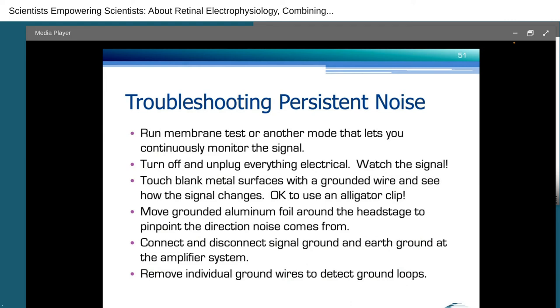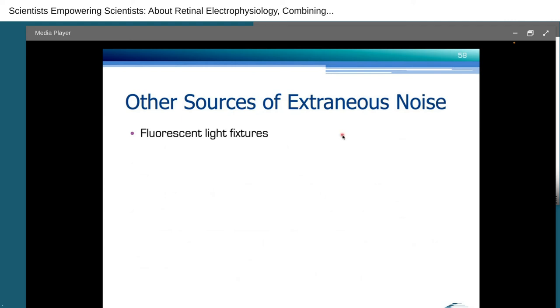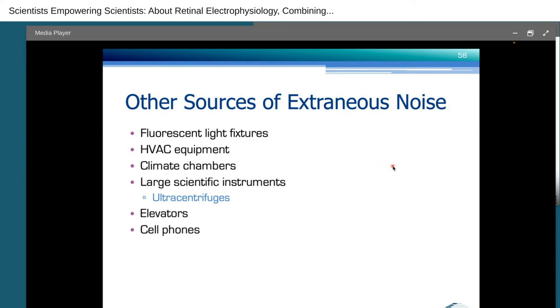You want to turn off and unplug everything electrical and watch your signal change. If it changes when you unplug something, then there you have your culprit. You want to touch blank metal surfaces with a grounded wire and again see how the signal changes. When I touch this screw near my objective mount on the microscope, and all of a sudden my line frequency hum goes away, then there you have your culprit. For this, it's okay to use an alligator clip. Only if you have identified a component, then use a banana or some other more reliable connector. You want to move a grounded sheet of aluminum foil around the head stage to get an idea of what direction the noise may come from. You may have to connect or disconnect the signal ground and earth ground at the back. Also what helps is removing individual ground wires to detect ground loops. In general, you want to not leave ground wires in place that don't give you a benefit. If it doesn't make it better, then there's a pretty good chance that it makes it worse. And with that, what I'll do is I will skip ahead a little bit, skip the second use case scenario with P over N leak subtraction and go to other sources of extraneous noise.